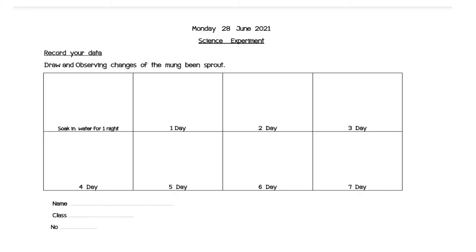In this experiment, you will draw and observe changes of the mung bean sprout. In day one you will draw what will happen to the bean in day two, in day three, in day four, in day five, in day six, in day seven. Before you do the experiment, you will soak this in water for one night and put it in the cotton, and you will draw what you observe in the experiment.